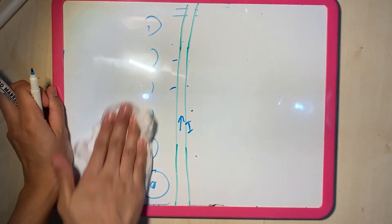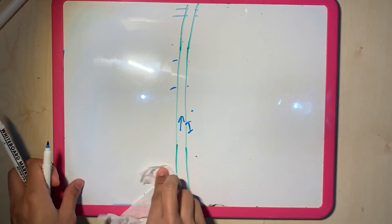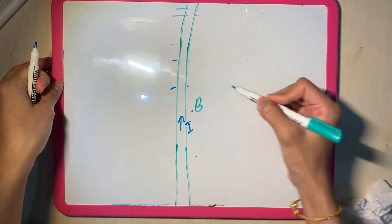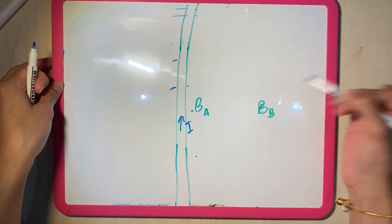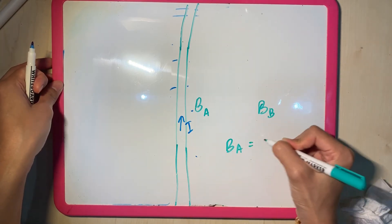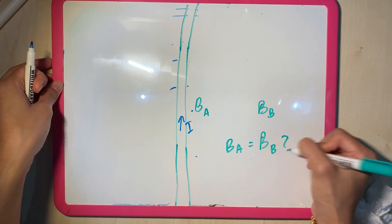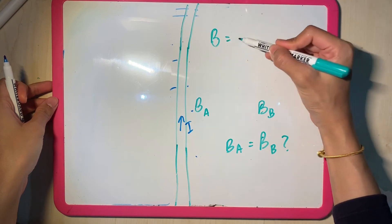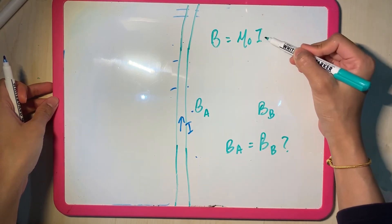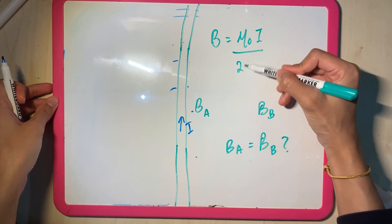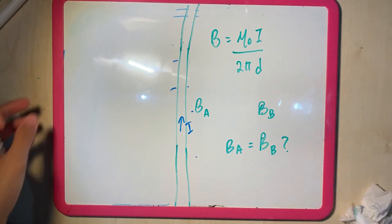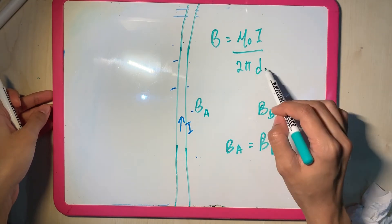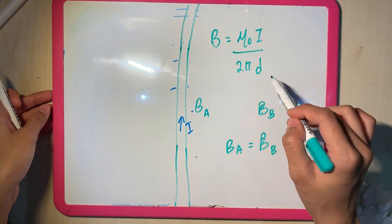What is my equation for this guy? Is my B going to be the same at this point versus this point? Is BA equal to BB? Let's find out. So using the equation for this straight wire, which is mu naught I, I is the current flowing in the wire, 2 pi, and the value D. What is D?